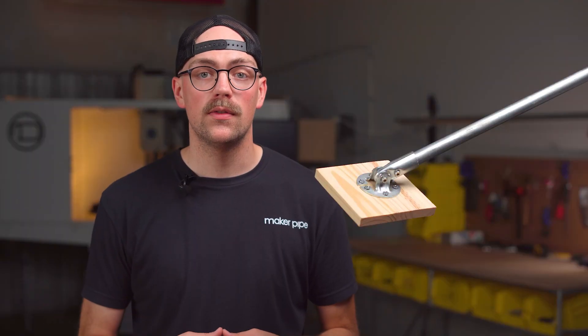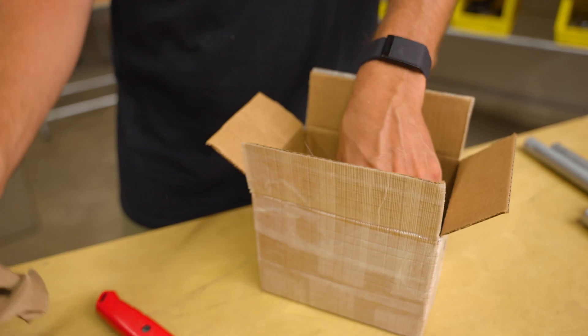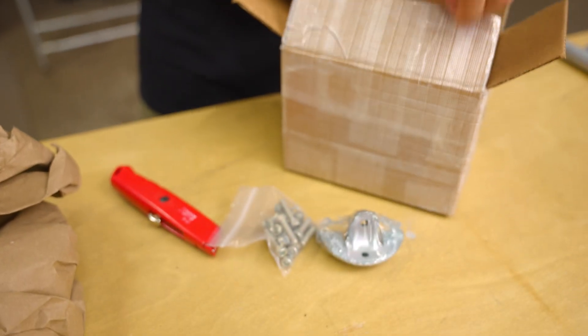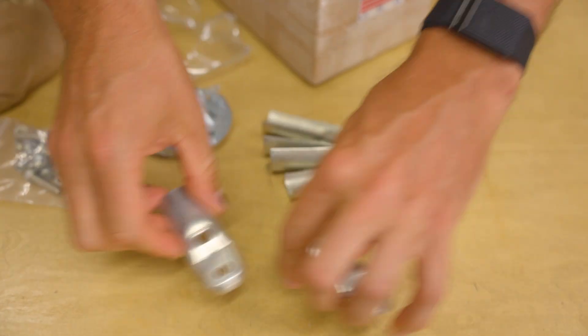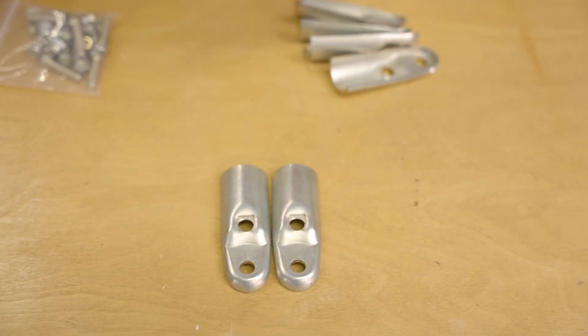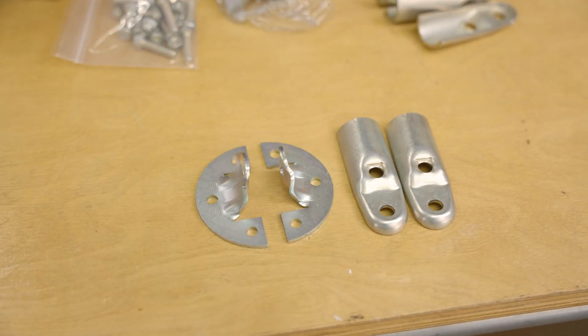Now that we have a good idea of how to use this flange in builds, let's put one together. To assemble the adjustable angle flange you will need a few pieces from inside your Maker Pipe shipment. You will need two of these pieces that make up what we call the end clamp. You will also need two of these pieces that make up the base of the flange.